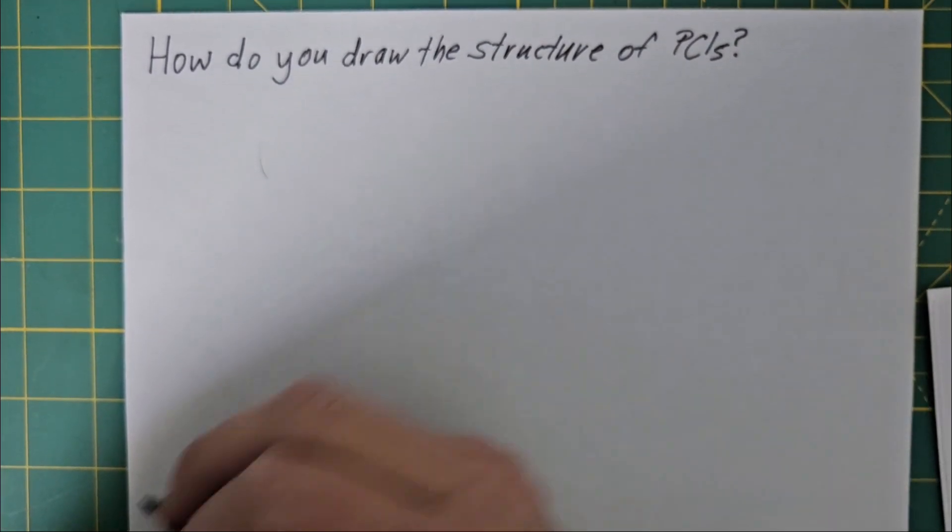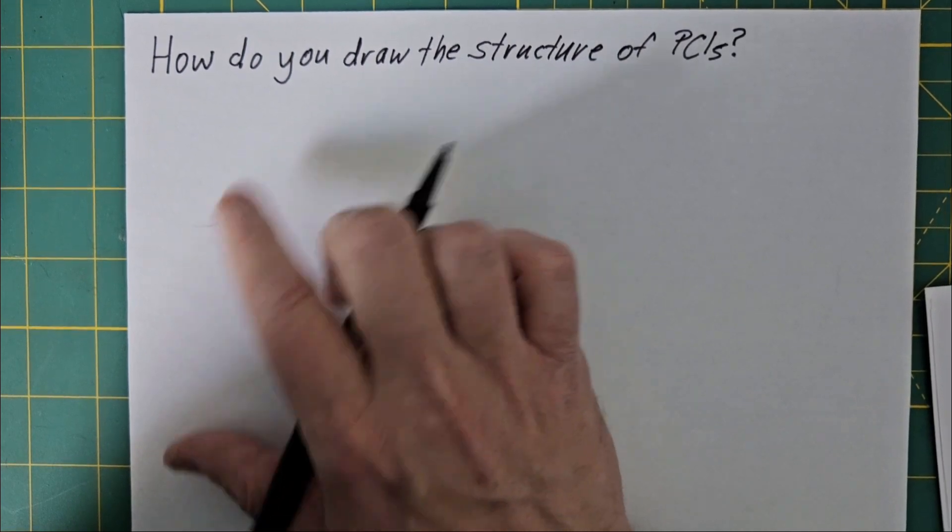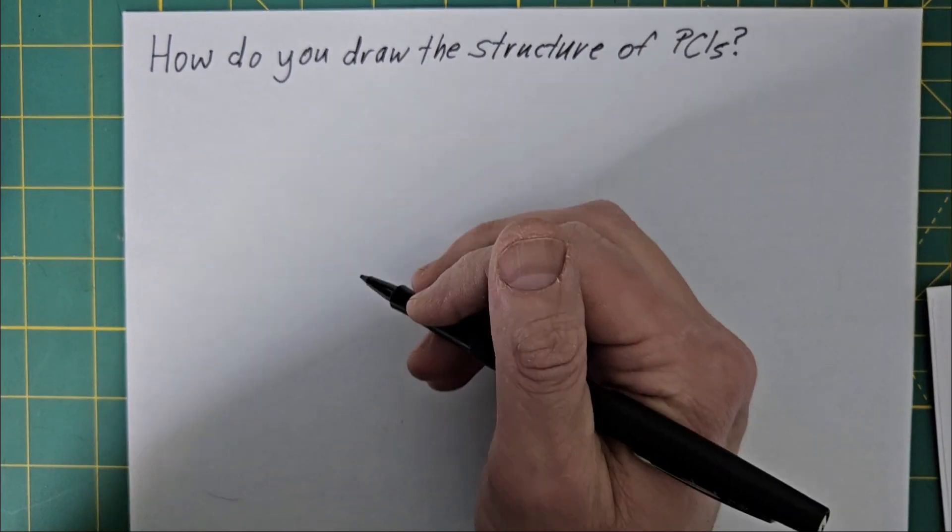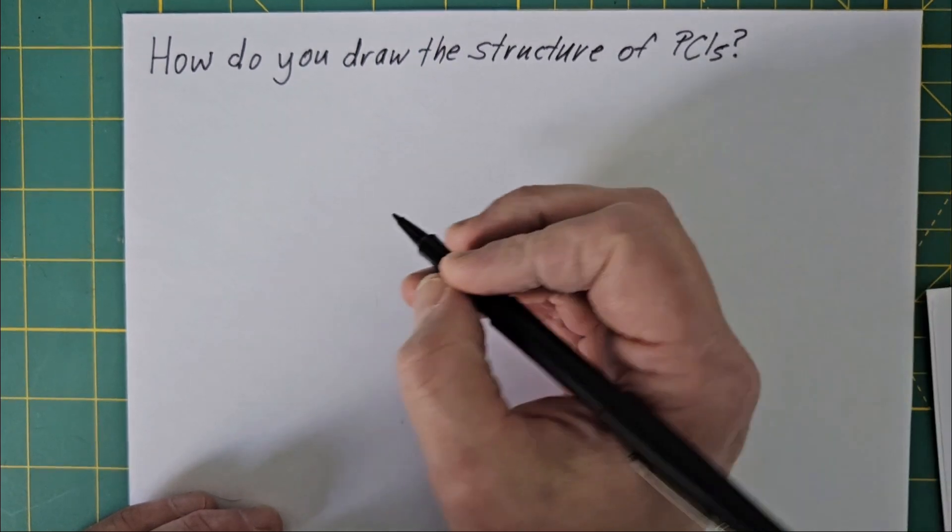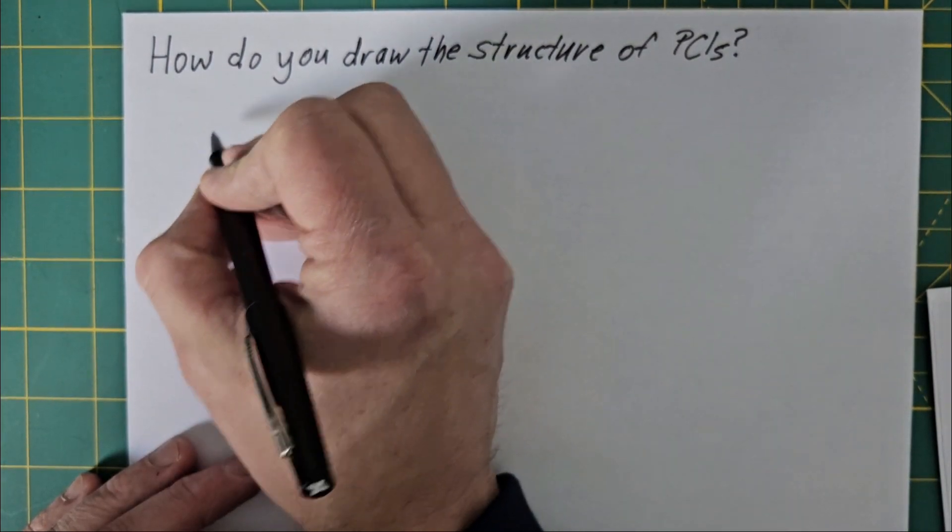How do you draw the structure of phosphorus pentachloride and compounds like that? Well, getting to phosphorus trichloride is quite easy.